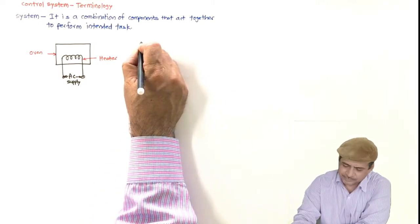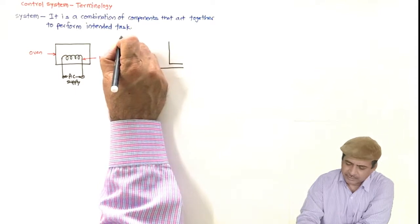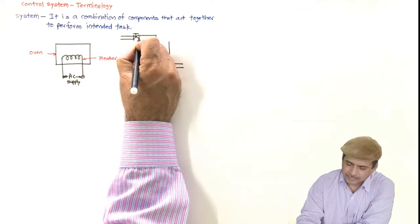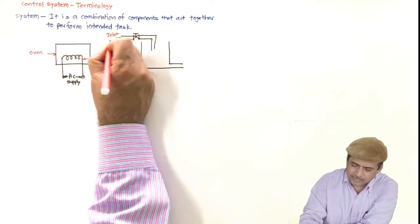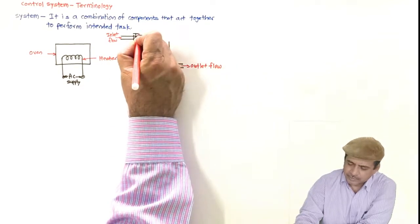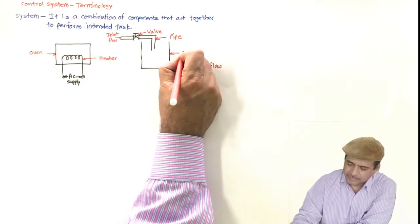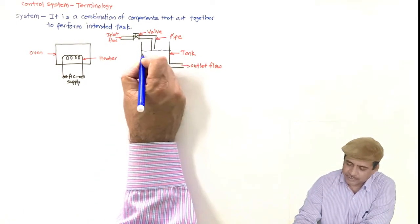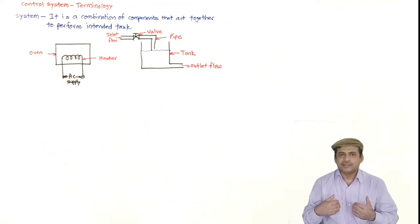Let us take one more example. Consider a tank with an outlet. There is an inlet flow, an outlet flow, a valve, a pipe, and a tank — so many elements acting together. For what? To have storage of liquid inside the tank. So this is also a system: different components acting together to perform the intended task.